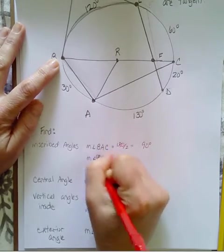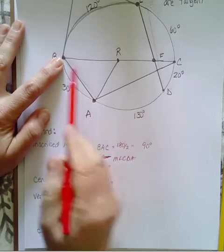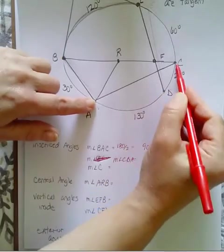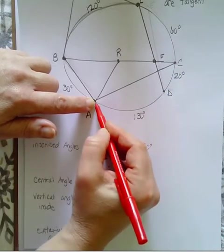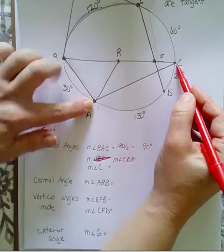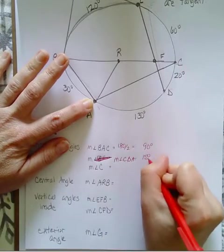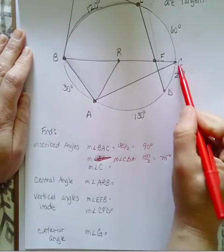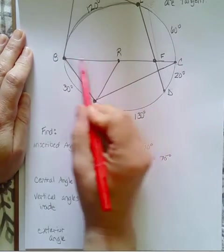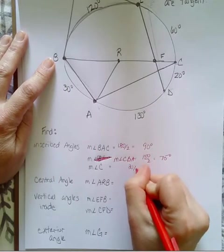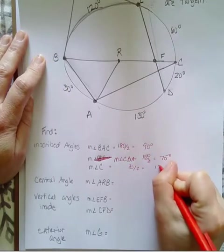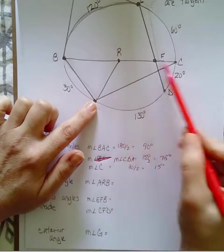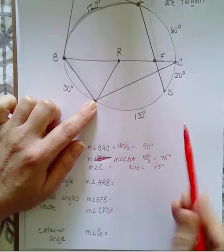BAC is an inscribed angle because the vertex is on the circle, and if I figure where its two sides are going, this is the intercepted arc. The intercepted arc is the semicircle because this is a diameter - 120 plus 60, that's 180 degrees. So I'm going to take that 180 and divide it by 2, and the measure of this angle is 90 degrees.